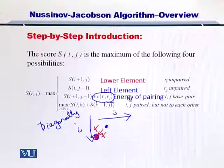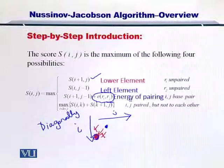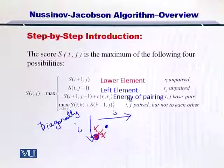If you're talking about the lower element, there is no additional hydrogen bond that is formed. If you're talking about the left element, there is no hydrogen bond formed. But in the case of the diagonal element, you have to consider the energy released as a result of nucleotide coupling.